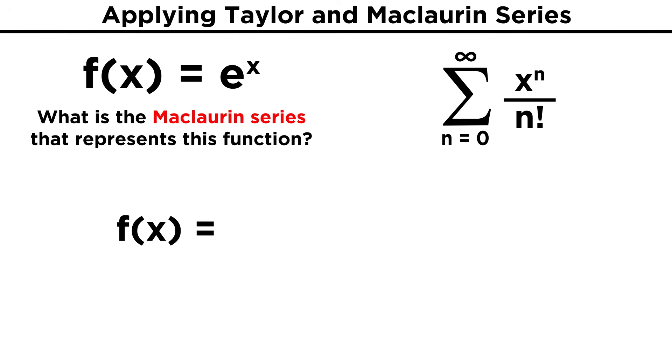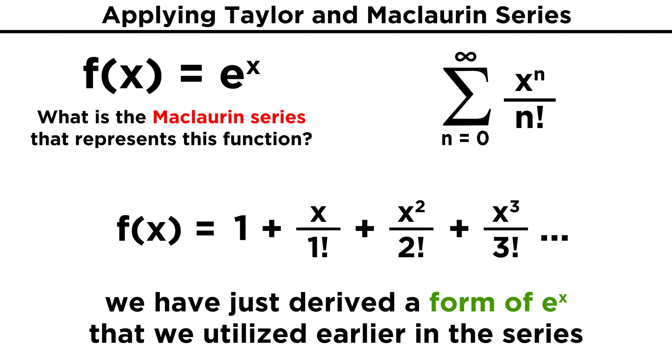We can therefore quite easily begin writing out the series, with x to the zero over zero factorial, or simply one, plus x to the one over one factorial, plus x squared over two factorial, and so forth. This should look very familiar, as we have just derived a form for e to the x that we utilized earlier in this calculus series. That form was actually the Maclaurin series for the function.